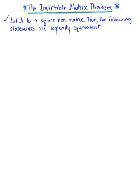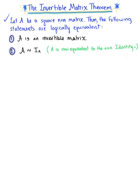The first statement in this theorem is that matrix A is an invertible matrix. Think about how many different concepts you already know are equivalent to this. If matrix A is an invertible matrix, we know automatically that matrix A is row equivalent to the n by n identity matrix.